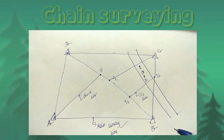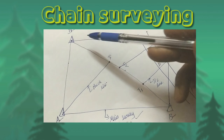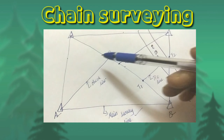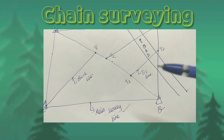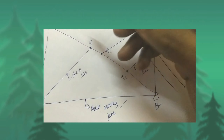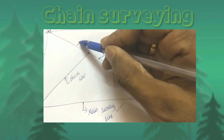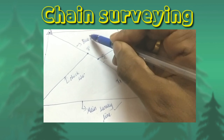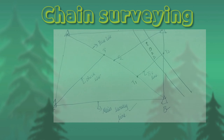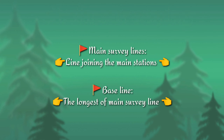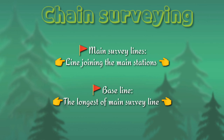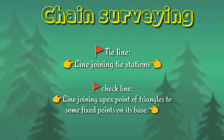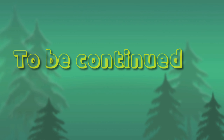Among all survey lines, the baseline is very important. The longest of the main survey lines is known as the baseline. In this diagram, the line connecting B and D is known as the baseline. With the help of all these survey stations and by performing chain surveying procedures such as ranging, chaining, and offsetting, we can calculate the total area of any plot using chain surveying.